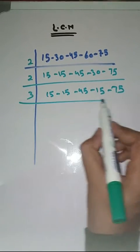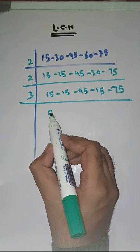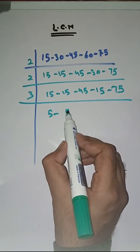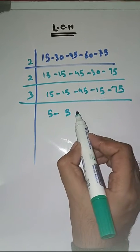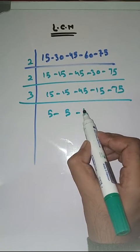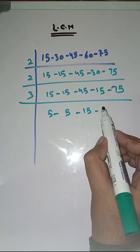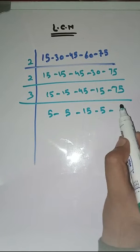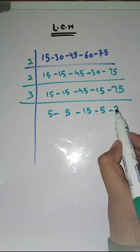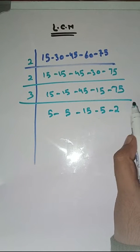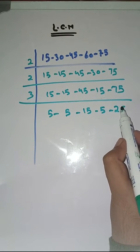Now with 3: 3 5s are 15, 3 5s are 15, 3 15s are 45, 3 5s are 15, 3 2s are 6 and 3 5s are 15.